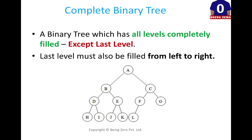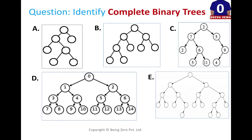Let's do a simple exercise now where you are given certain binary trees. If you see in the diagram, you have to identify which of these are complete binary trees. We just saw the definition: all levels should be completely filled and they should be filled from left to right order.